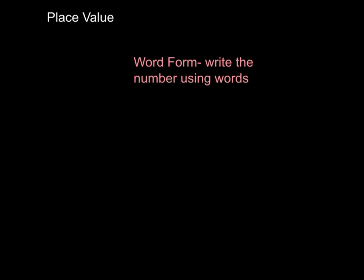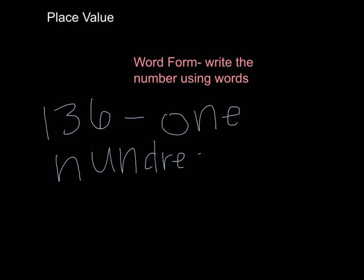The first vocabulary word we're going to talk about and learn today is word form. Word form is a way that you write the number using words, so I'm going to show you an example. If we had 136 in word form, it would be one hundred thirty six. And there is no and word. The only time we would say and is if we had a decimal. So if we had something like $136 and 50 cents, the and would stand for the decimal.